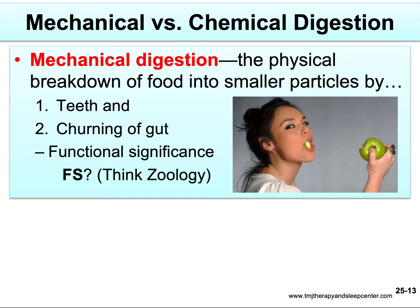There's another functional significance regarding churning of the gut — it's mixing. Within the stomach and small intestine, there's mixing going on. You've got a fairly large chamber in the stomach and small intestine, and if there were only chemical absorption without mixing, the edges would be absorbed but you wouldn't do much with what's in the middle. Churning and mixing allows all of that smoothie-like material in the small intestine to have a chance to be absorbed.